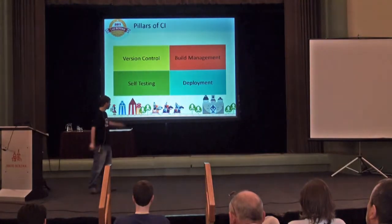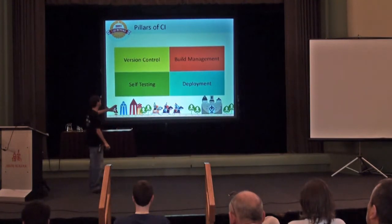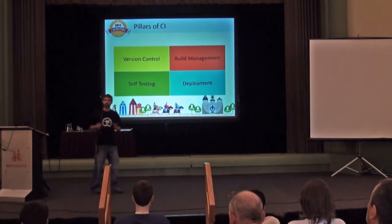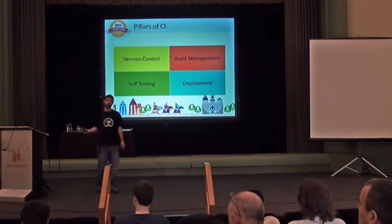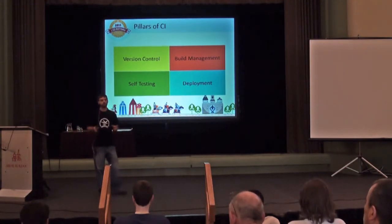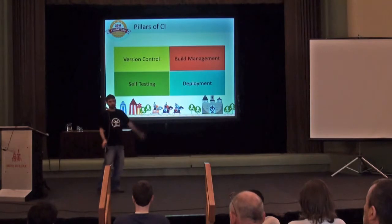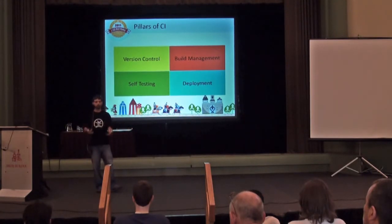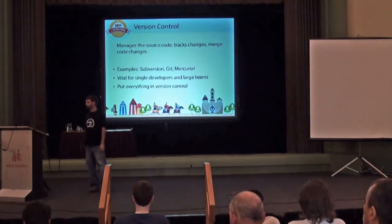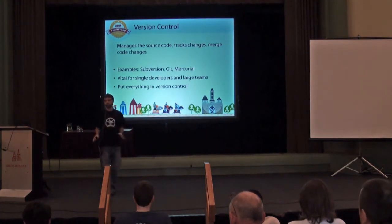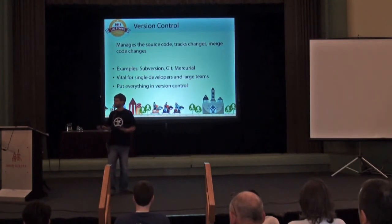These are the four pillars that hold up the whole process of continuous integration: version control, build management, self-testing, and deployment. The nice thing is you can choose which parts you really need and don't have to start by doing all of it. Version control is the foundation — you have to have your code under some kind of version control: Subversion, Git, Mercurial. Even if you're just a single developer, have everything under version control, including all the files necessary for your continuous integration process.